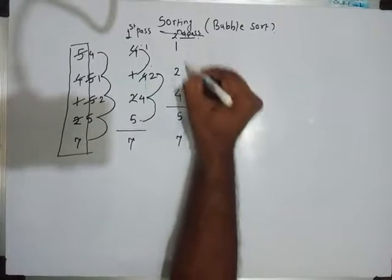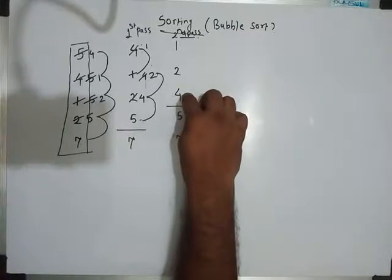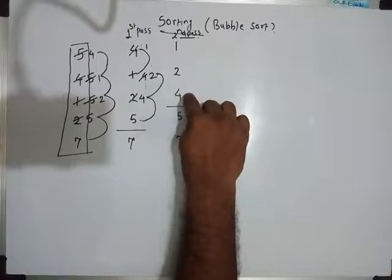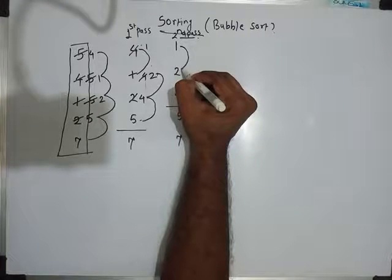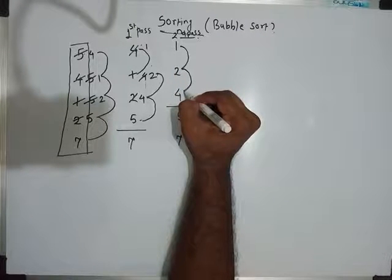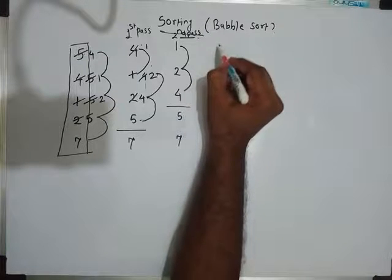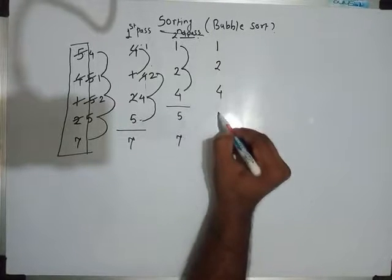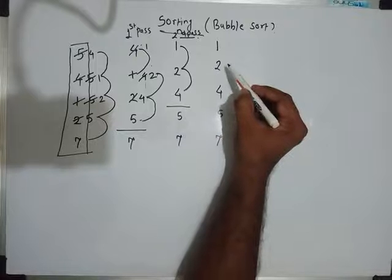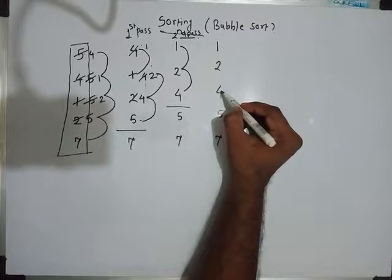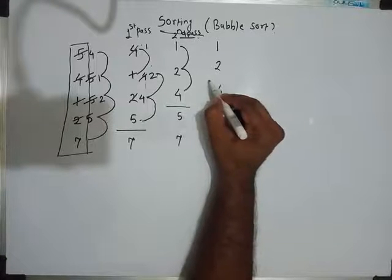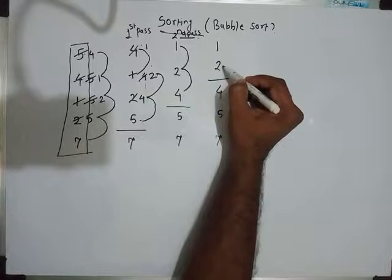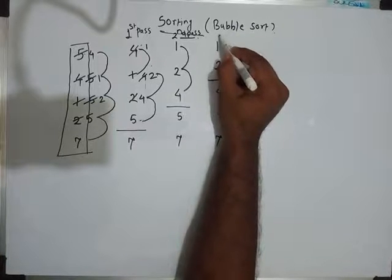In the third pass we find the largest element in the remaining array and push it to the last position of this part. Compare 1 with 2: 1 is less than 2, don't swap. Compare 2 with 4: 2 is not greater than 4, don't swap. The output of this pass is 1, 2, 4, 5, 7. At the end of the third pass we have the third largest element — which is 4 — at the third last place.